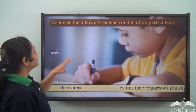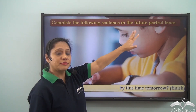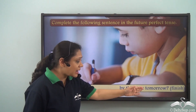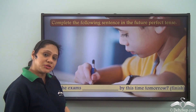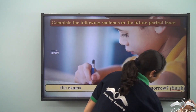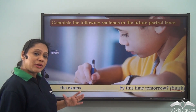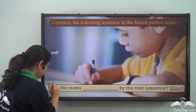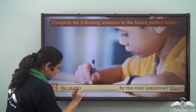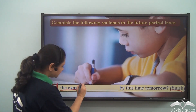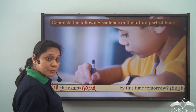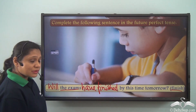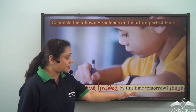Now let us do this exercise. Complete the following sentence in the future perfect tense. The sentence given to us is: Dash the exams dash by this time tomorrow, and the verb given is 'finish'. The form is 'will' followed by the subject 'the exams', followed by 'have', followed by the past participle 'finished'. So our sentence will be: Will the exams have finished by this time tomorrow?